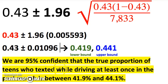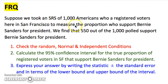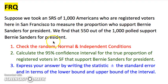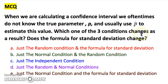Now for practice: suppose we took an SRS of 1,000 registered voters in San Francisco and want to measure the proportion who support Bernie Sanders for president. We find that 550 out of 1,000 polled support him. Check the random, normal, and independent conditions. Calculate the 95% confidence interval showing the point estimate ± z* × standard error, the margin of error, and the lower and upper bounds. Pause and answer that, then resume for the multiple choice: we don't know the true parameter p and use p-hat instead — what does that change about the random, normal, and independent conditions, and does it change the formula for standard deviation?